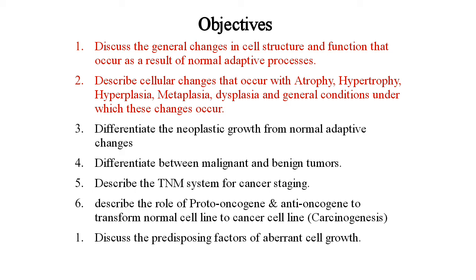Number 3 - differentiate the neoplastic growth from normal adaptive changes. Number 4 - differentiate between malignant and benign tumors. Number 5 - describe the TNM system for cancer staging. Number 6 - describe the role of proto-oncogenes and anti-oncogenes to transform normal cell line to cancer cell line (carcinogenesis). Discuss the predisposing factors of aberrant cell growth.